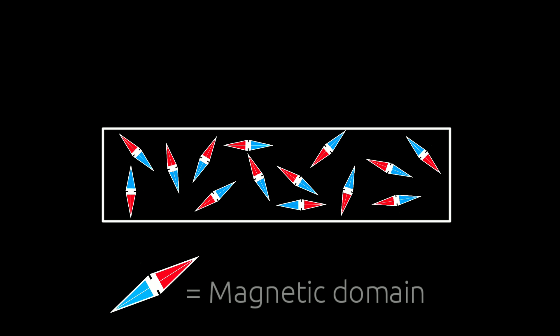Ferromagnetic materials have many smaller individual magnetic domains. These domains are tiny magnets, and each has its own magnetic field. Normally these domains are aligned randomly and cancel each other out.